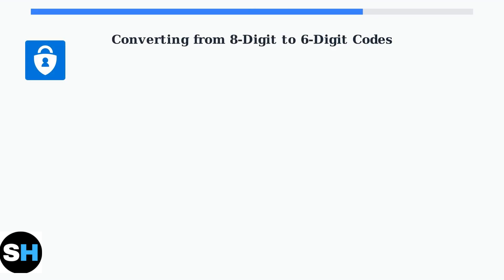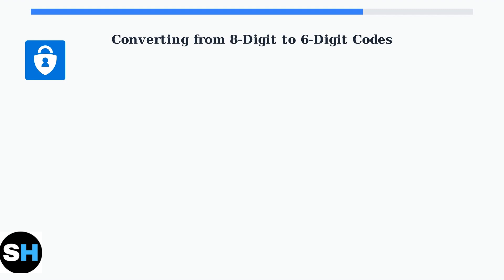Sometimes you may find your Microsoft Authenticator app is generating eight-digit codes instead of the standard six-digit codes. Here are three reliable methods to convert your codes to the proper six-digit format.